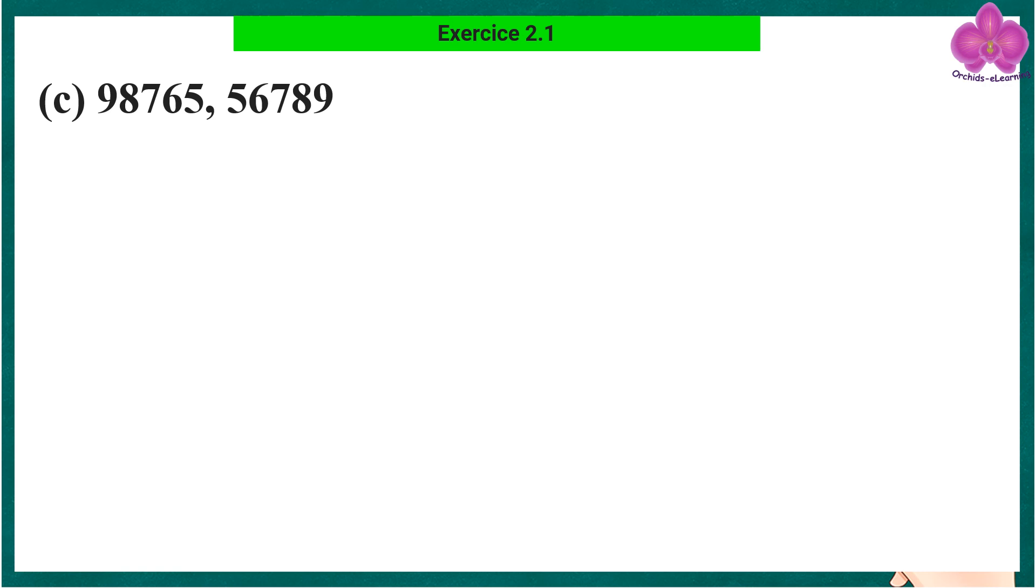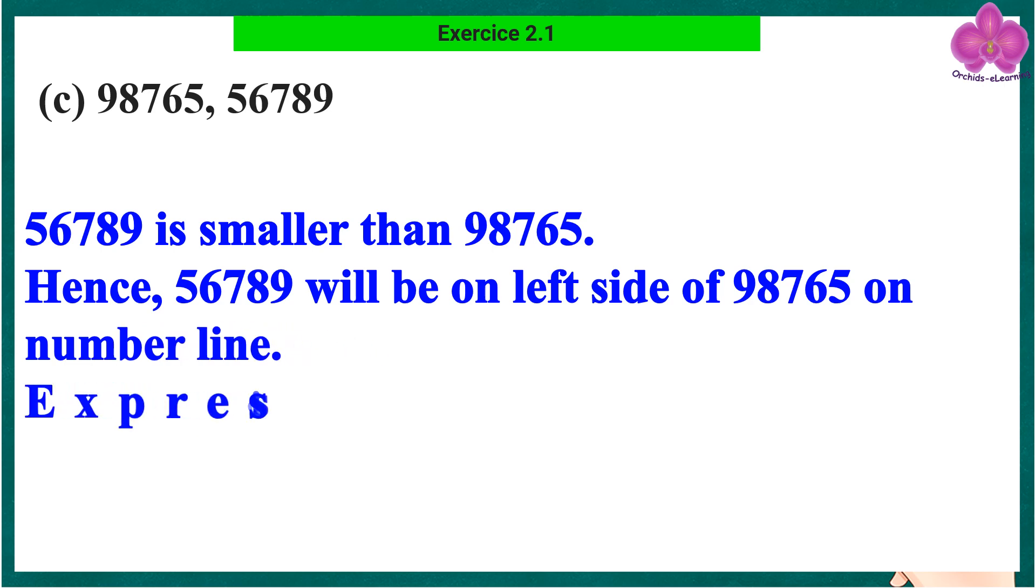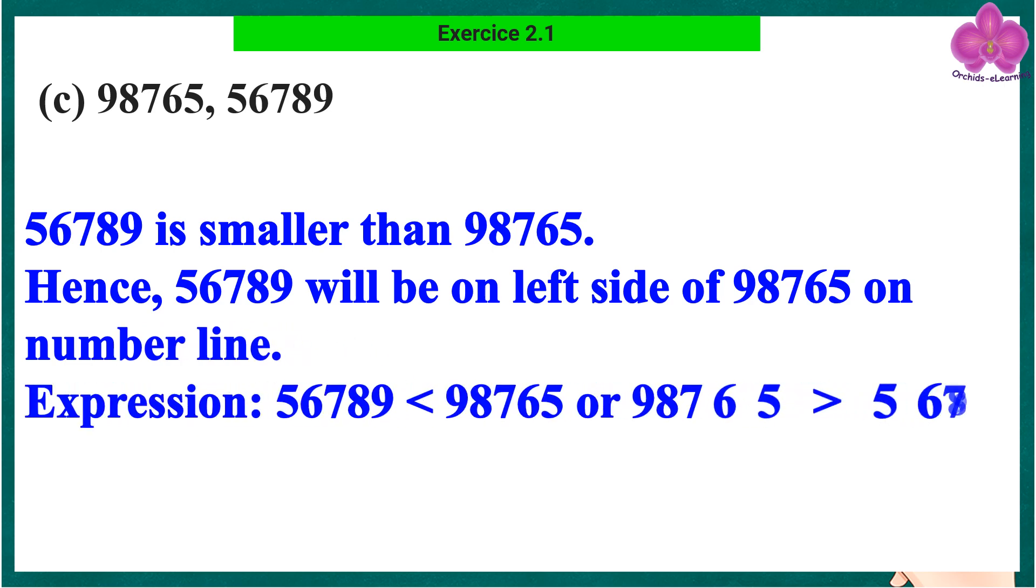Part c: 98,765 and 56,789. 56,789 is smaller than 98,765. Hence, 56,789 will be on the left side of 98,765 on the number line.